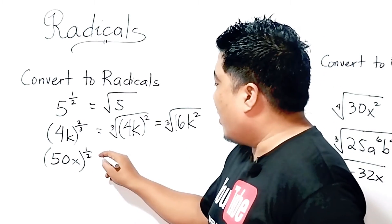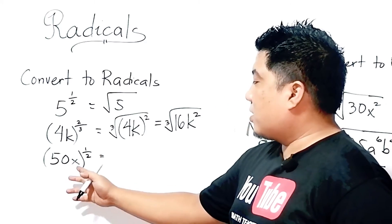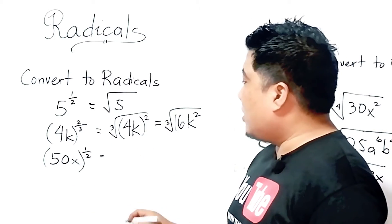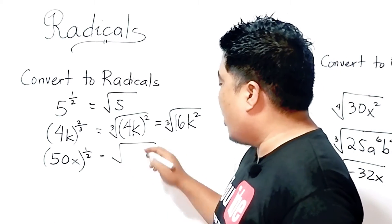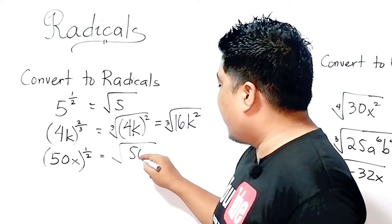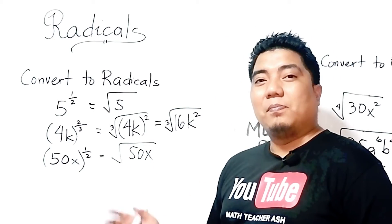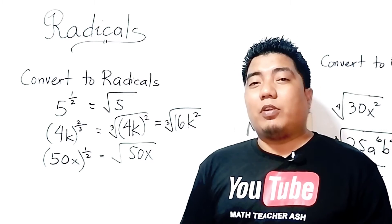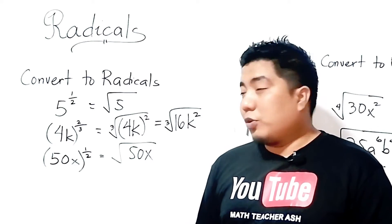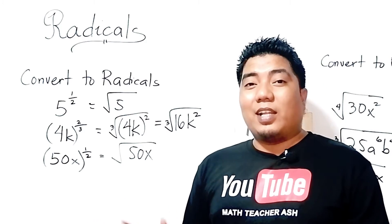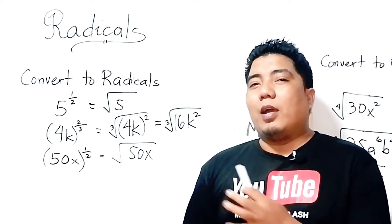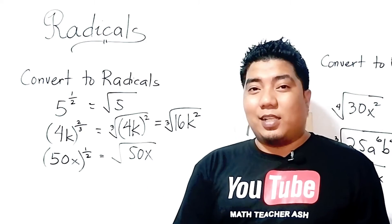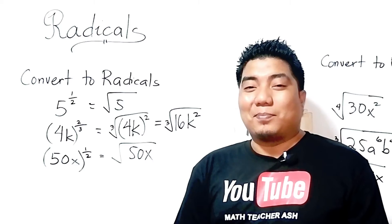How about 50x to the power of 1 half? Converting this into radicals, this will become the square root of 50x. Now, for students who have prior knowledge on radicals, some of these answers may not yet be in simplified form. The concept here is that we are converting the exponential to radical form — not simplifying them.